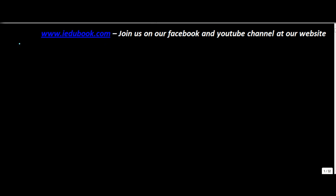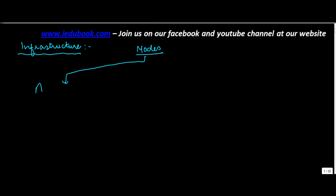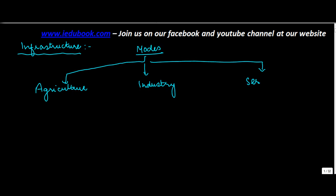Today I am going to explain to you about infrastructure. In any country, there are two main modes through which the economy works, and these are agriculture, the second is industry, and of late, the third constituent is services.